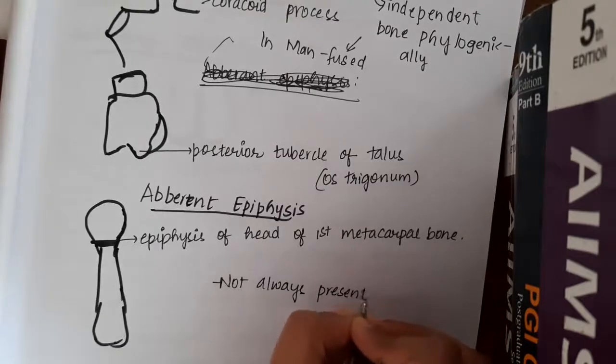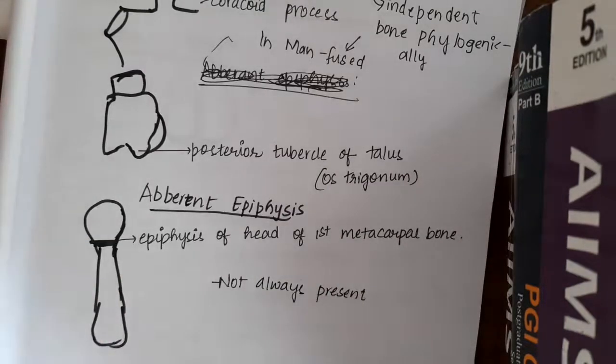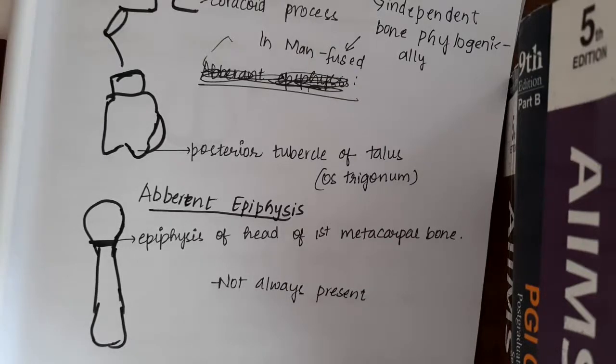This aberrant epiphysis, example is the epiphysis which is present at the head of first metacarpal or base of other metacarpals. These are not always present.